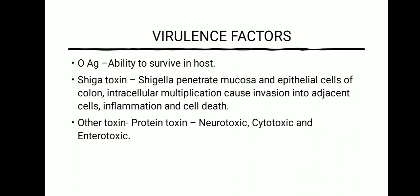Next, we will discuss its virulence factors. The virulent property is mainly due to the antigen that gives its ability to survive in the host, that is in human beings. This organism produces a toxin called Shiga toxin. The role of this toxin is to enable Shigella to penetrate the mucosa and epithelial cells of the colon of the human host. Intracellular multiplication then causes invasion into adjacent cells and leads to inflammation and cell death.